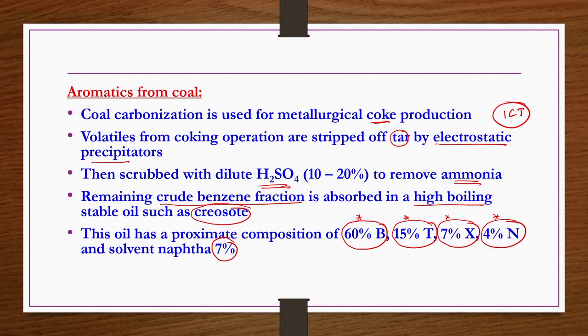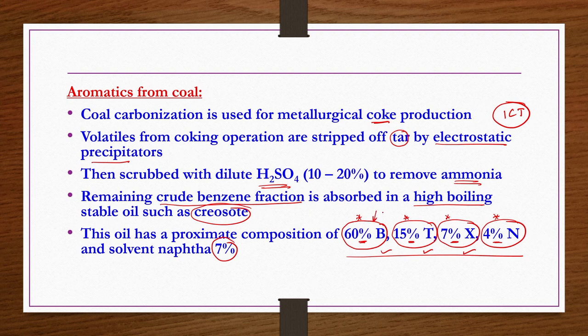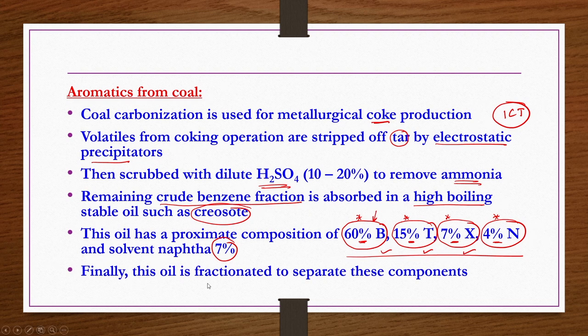The aromatics produced from coal have different fractions, but when studying aromatics production from petroleum crude you will realize that benzene (B), toluene (T), and xylene (X) are produced in almost equivalent quantities from oil sources. From coal you get less amount, and out of that less amount 60 percent is benzene. Finally, this oil is fractionated to separate these components.